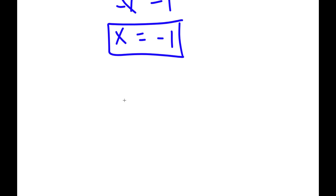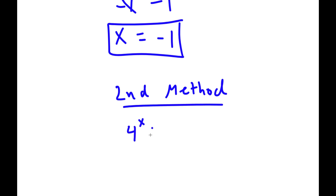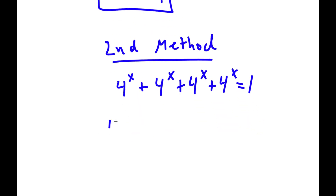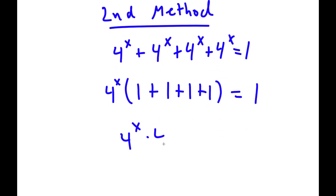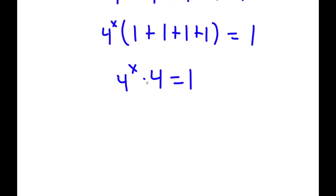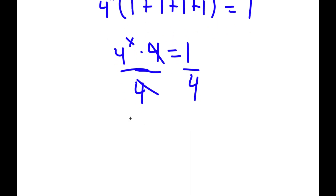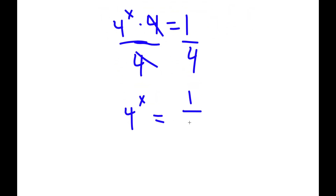I actually have a second method of solving this problem. I again start with 4 to the power of x plus 4 to the power of x plus 4 to the power of x plus 4 to the power of x is equal to 1. Factoring out 4 to the power of x gives 4 to the power of x times 4 equals 1. This time, instead of multiplying these two, I'm going to divide both sides by 4, so those cancel out, and now I have 4 to the power of x is equal to 1 over 4.